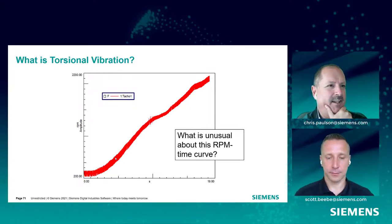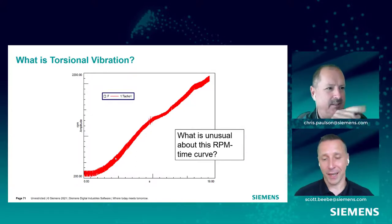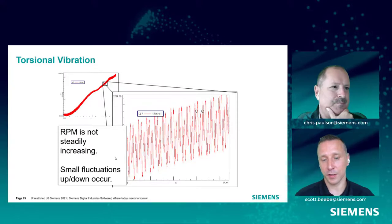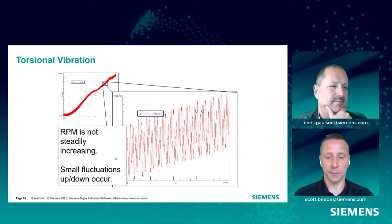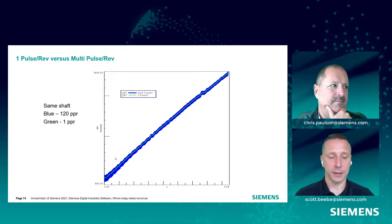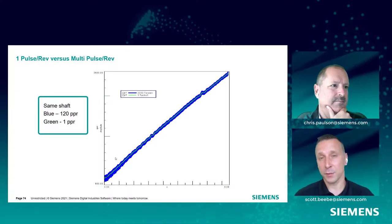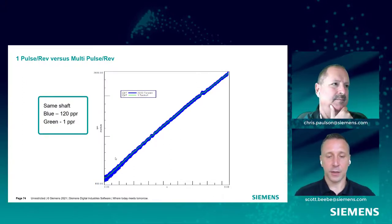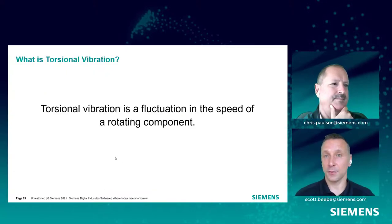If we zoom in on a portion of this signal, you can see the RPM is not steady — there are small fluctuations going up and down. The reason is we're getting a lot of detail in this RPM signal. Changing that RPM signal from red to blue and dropping a second curve: the green line is one pulse per rev and the blue line is 120 pulses per rev. The small fluctuations in the display are actually measuring the small fluctuations of the shaft as it rotates. The benefit is we can look at something called torsional vibration.